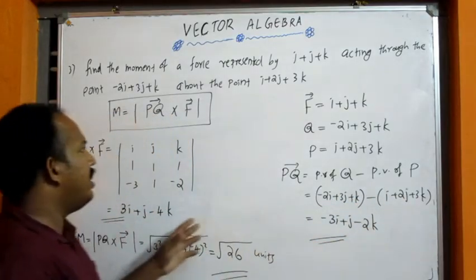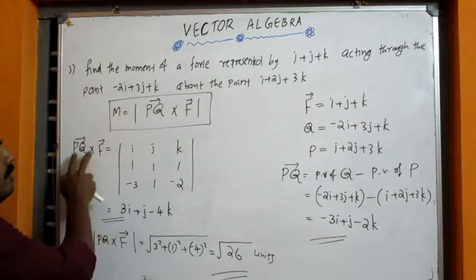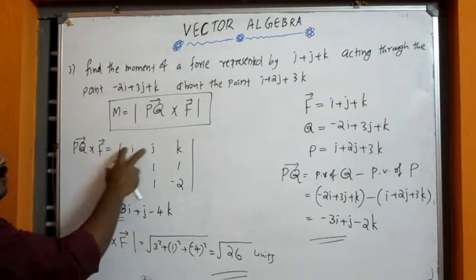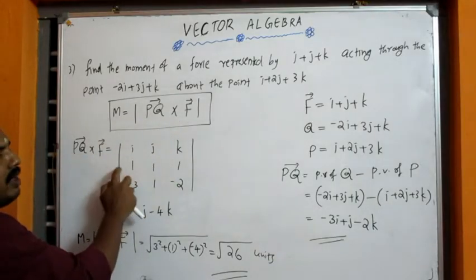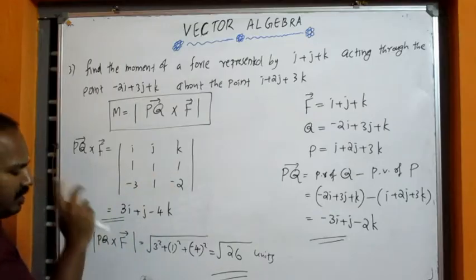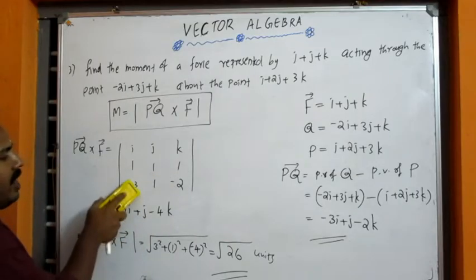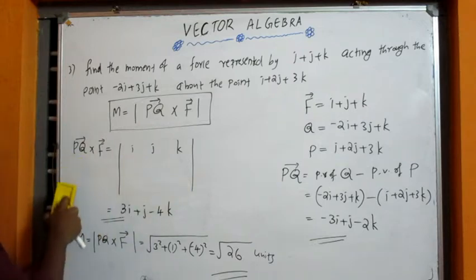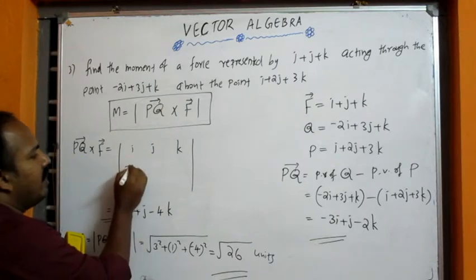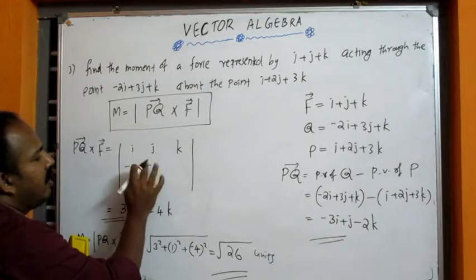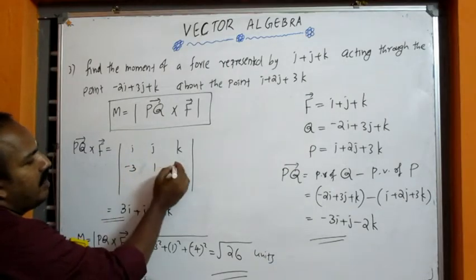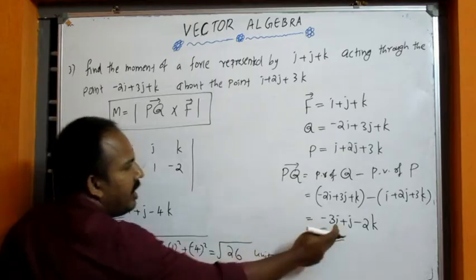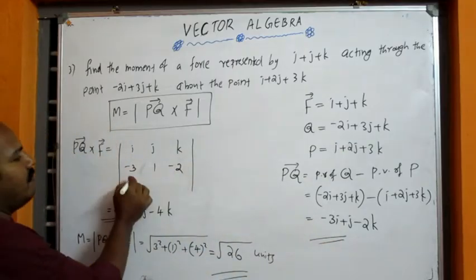Now we have the formula PQ cross F. With i, j, k values, PQ value calculation: minus three plus minus two, minus three plus one minus two, then PQ value equals 3i plus j minus k.